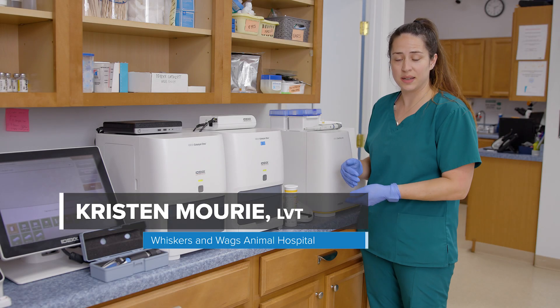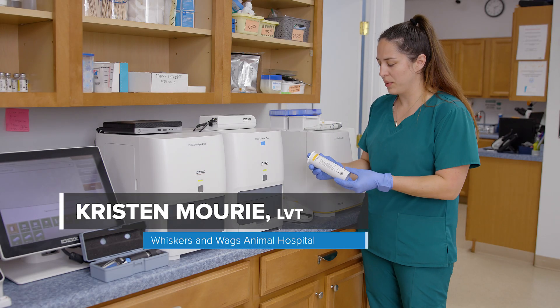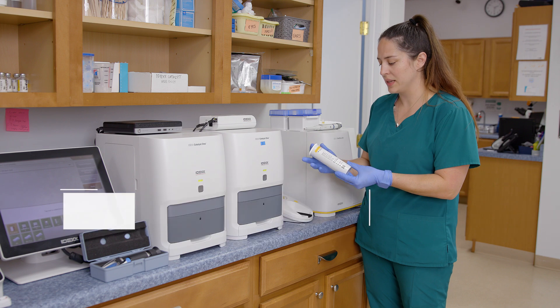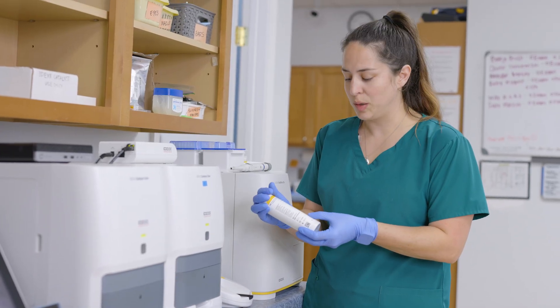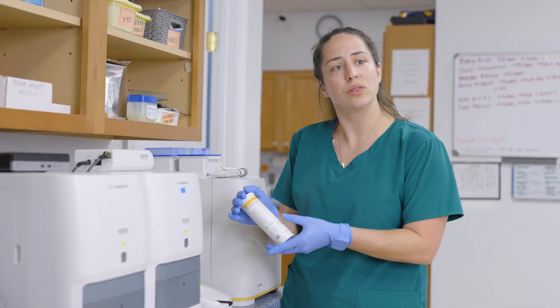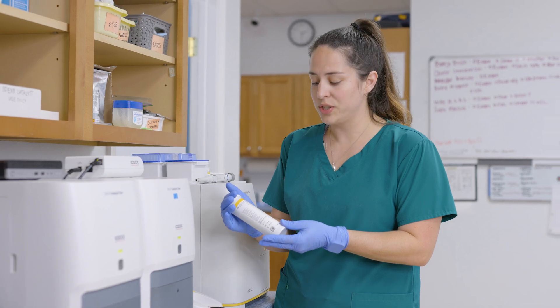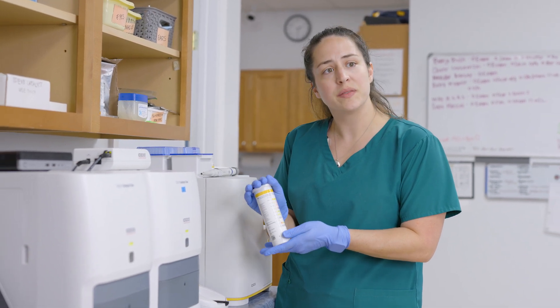Next we're going to do the urine dipstick. This is testing a number of different things, so we're looking at things like blood concentration that could be in here, protein, glucose, urobilogen, ketones, and pH of the urine as well.